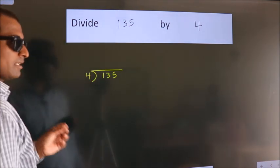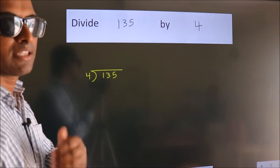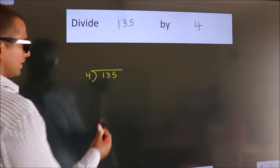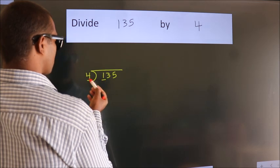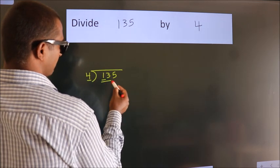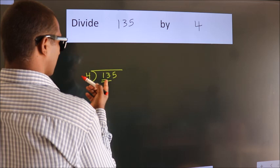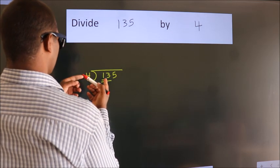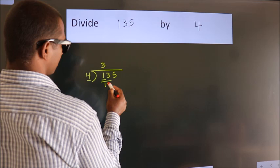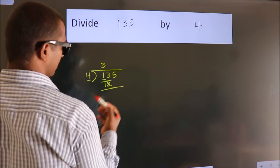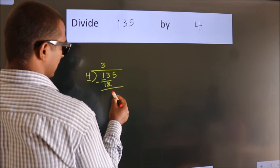This is your step 1. Here we have 1, here 4. 1 is smaller than 4, so we should take 2 numbers: 13. A number close to 13 in the 4 table is 4 times 3, which is 12. Now we should subtract. We get 1.